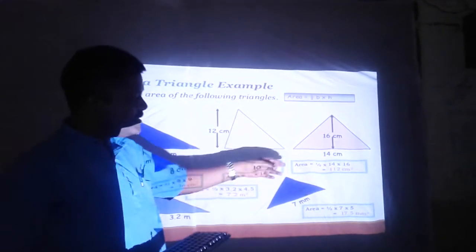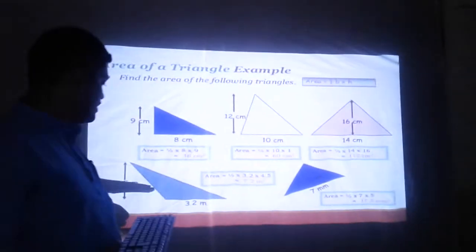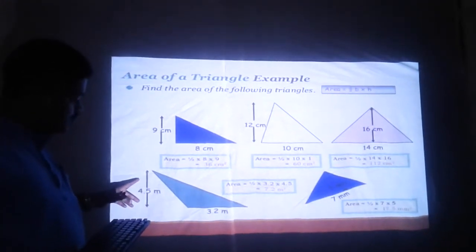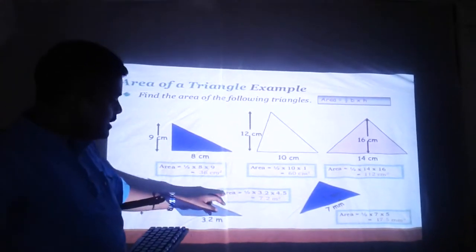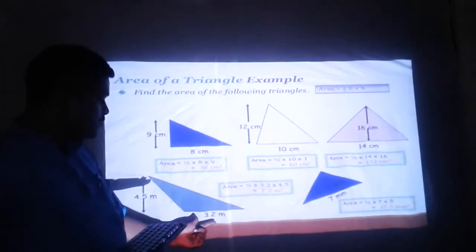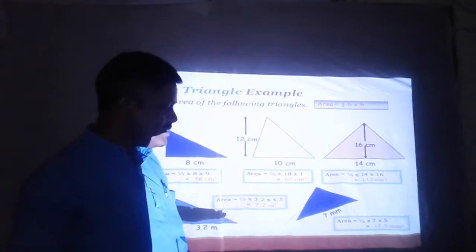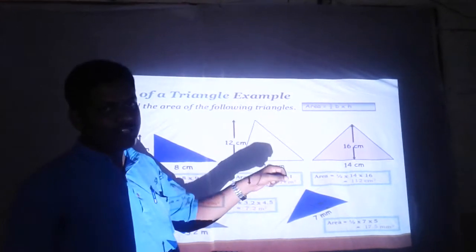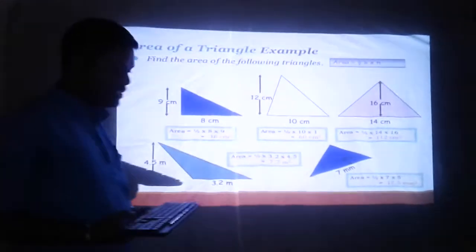In the third example, the base is 14 cm, height is 16 cm. One-half into 14 into 16 gives 112 cm squared. Here, the base is 3.2 m and the height is 4.5 m. The unit meters is used, so in the answer we should use meter squared. Area equals one-half into 3.2 into 4.5, which comes to 7.2 m squared. In the last diagram, the base is 7 mm, height is 5 mm. We should concentrate on the unit given. One-half into 7 into 5 equals 17.5 mm squared.